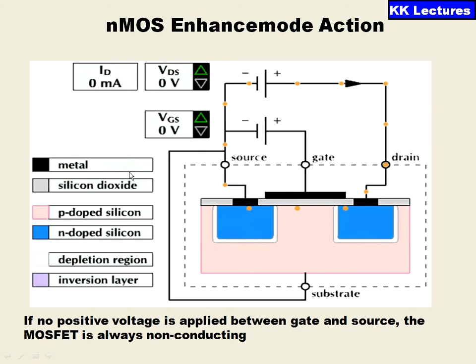My NMOS transistor has a source, gate, and drain. This source and drain are diffused into a p-type substrate. The N-type and p-type are forming a PN junction here and here. Now let us make the connections.